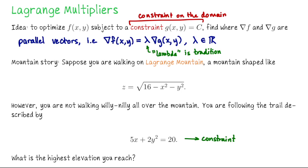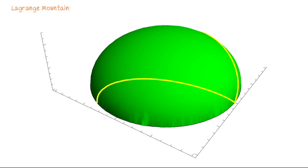So if I'm at some point on this mountain, my x coordinate times 5 plus 2 times my y coordinate squared must equal 20. Given that I'm stuck on this trail, how high do I get? I'm not going to the summit — let's find my maximum height on the trail. Here's Lagrange Mountain with the trail highlighted. There is a summit, but we're just going to follow this path.